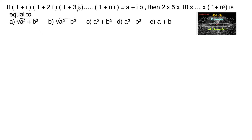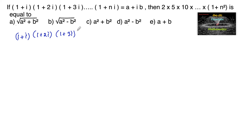So given: (1+i) into (1+2i) into (1+3i) into and so on (1+ni) is equal to a+ib.